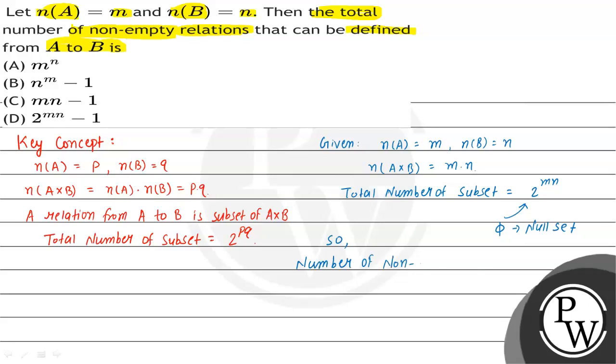The total is 2^(mn), which includes the empty set. Since we need non-empty relations, we subtract 1.